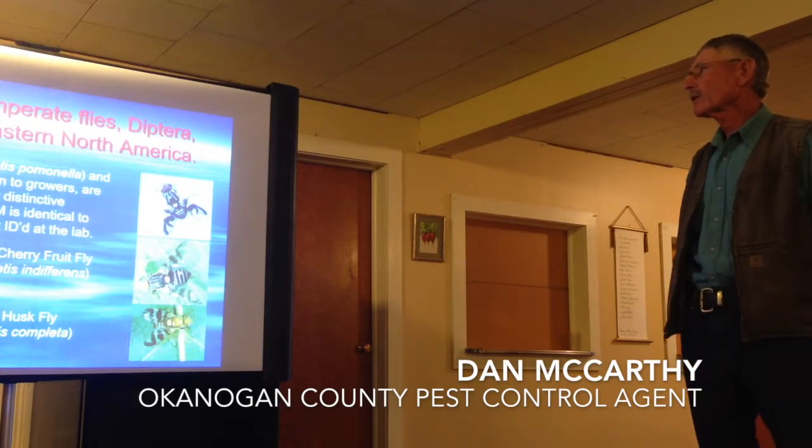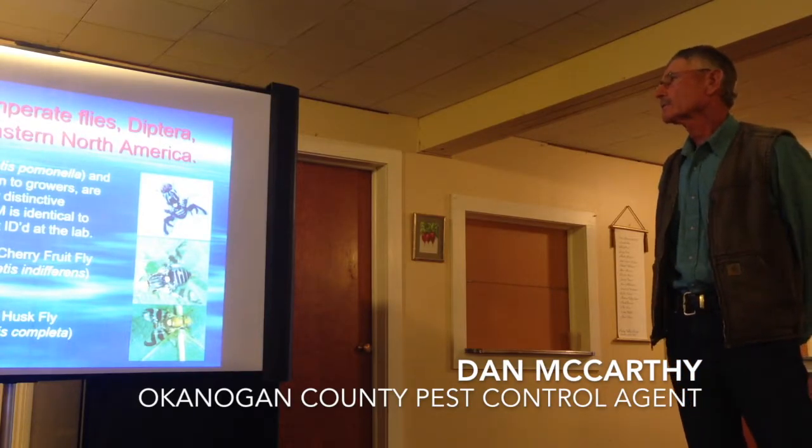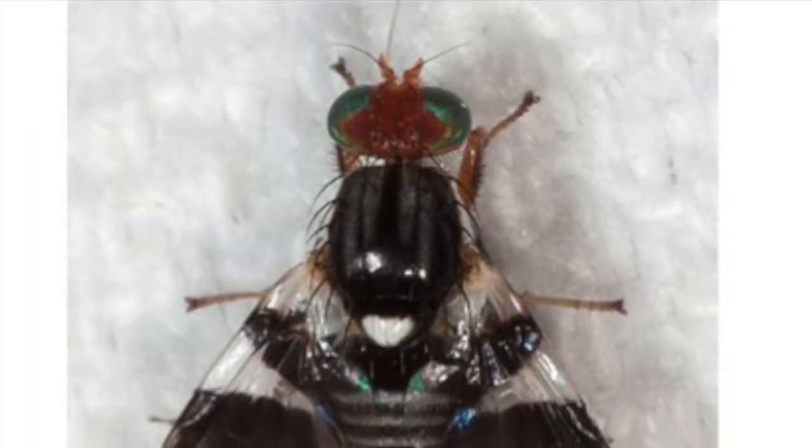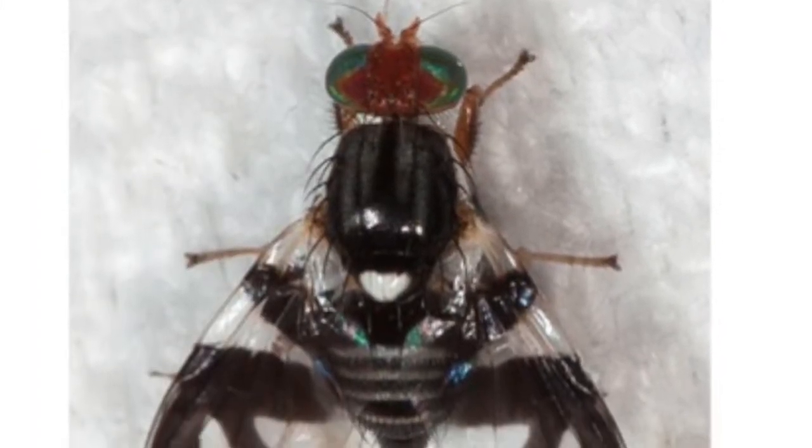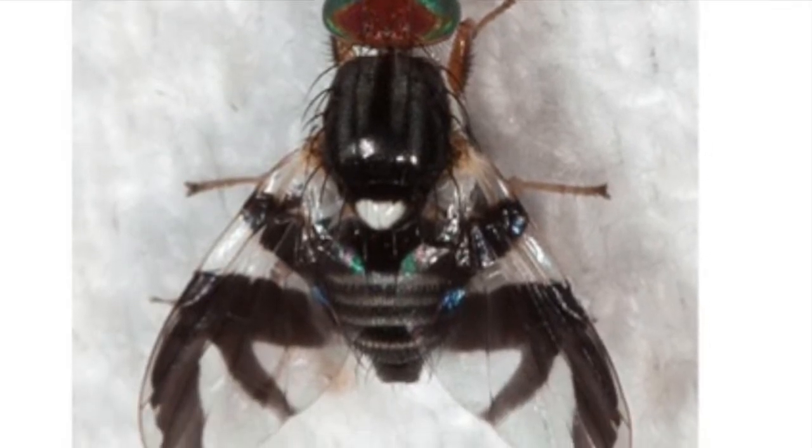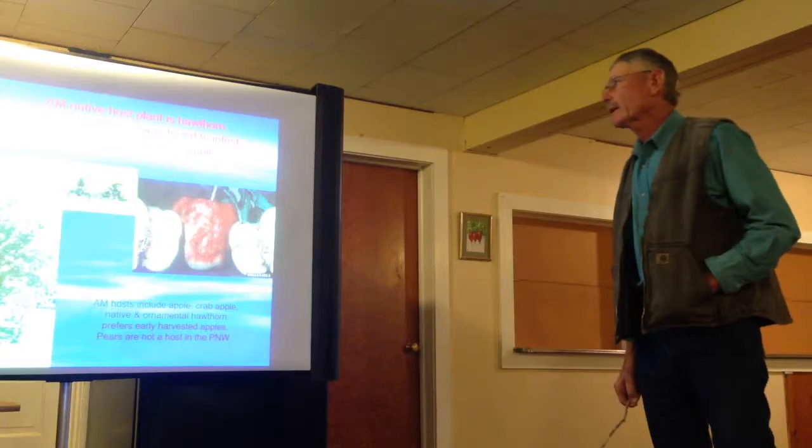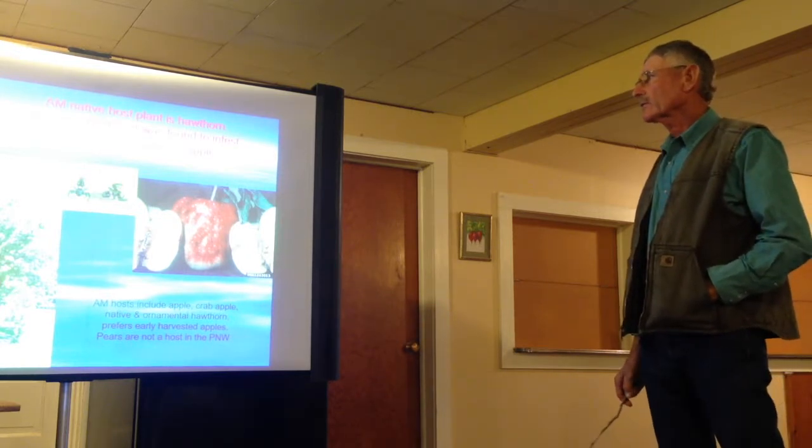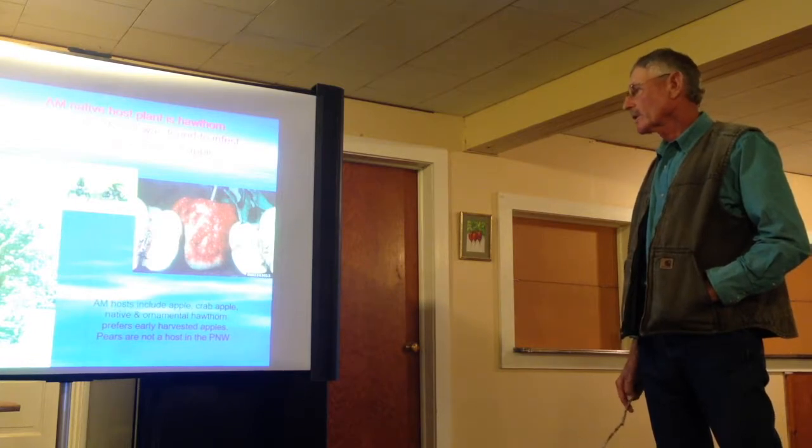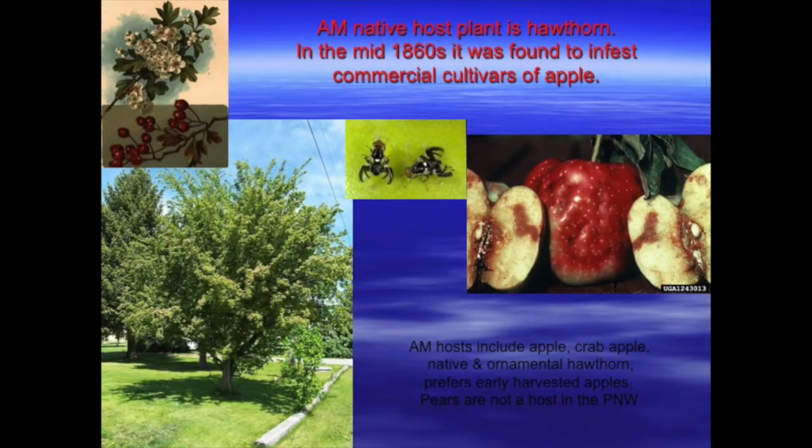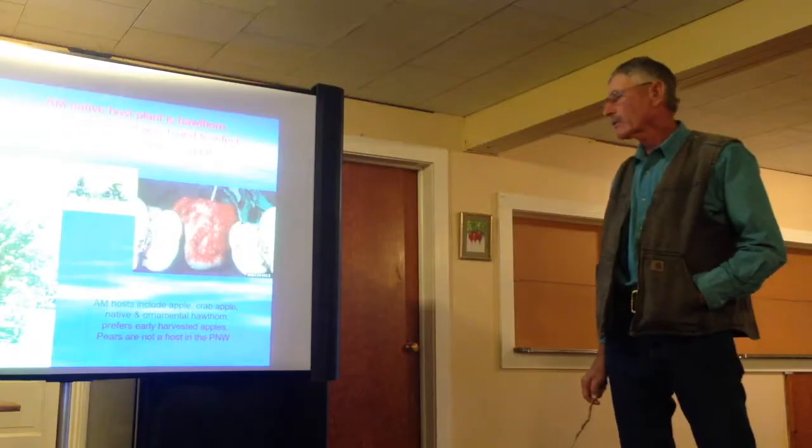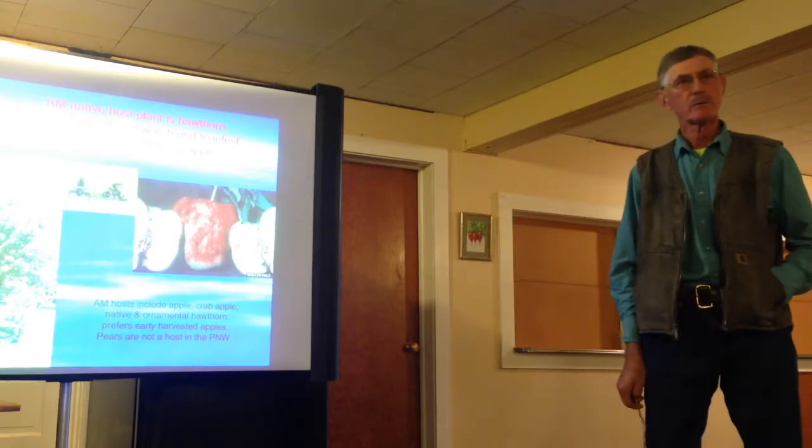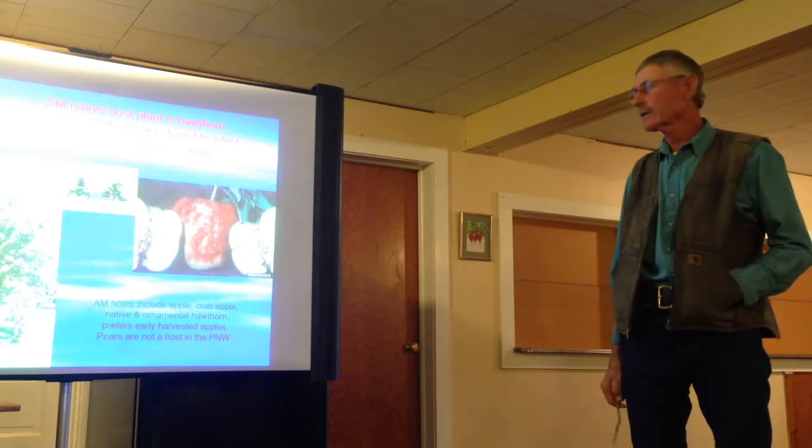Apple maggot is a tephritid fly, Diptera, native to eastern North America. The apple maggot and related flies are identified by their distinctive wing bars. Apple maggot's native host is hawthorn, and in the mid-1860s it was found in the best commercial cultivars of apples. The hosts in north central Washington here are apple, crabapple, native and ornamental hawthorn. Pears are not the host for apple maggot in the Pacific Northwest, they are in other regions of the country.